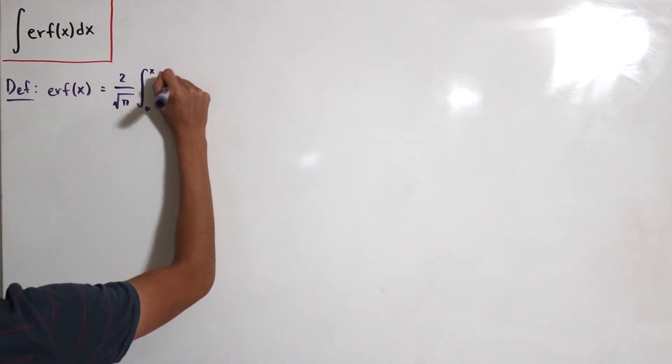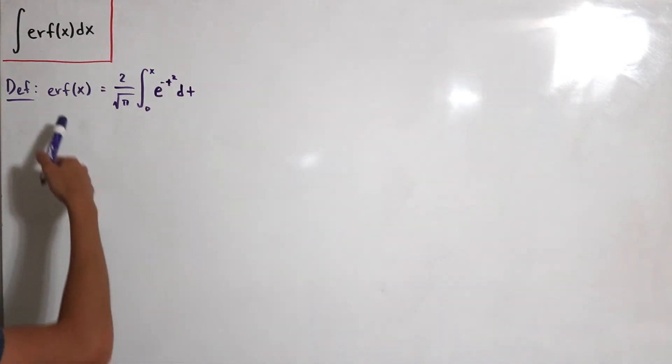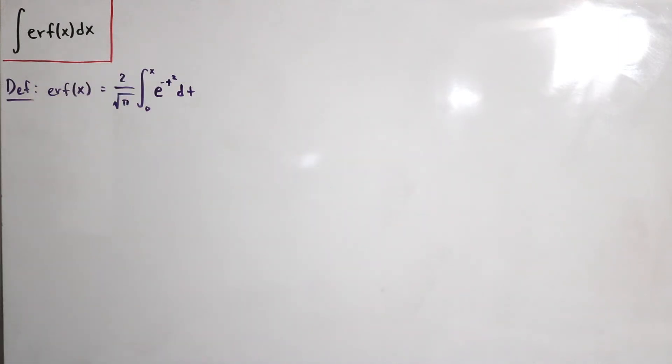So you can show that by simply putting your input for negative x onto here and then using substitution to show that it's an odd function, negative error function of x.